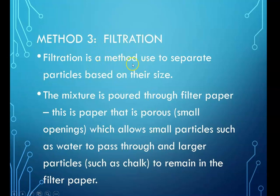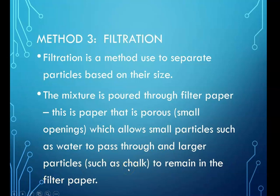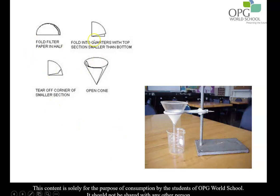Filtration is a method to separate particles based on their size. The mixture is poured through a filter paper, which has very small openings that allow only small particles such as water to pass through. Larger particles like chalk, sand, and flour will not pass through and will remain on the filter paper. The filter paper is folded in half, then into quarters, to form an open cone that fits inside the funnel.